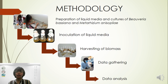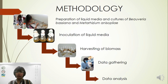Biomass was filtered, oven-dried, and macerated, and spore count including young spores and blastospores were counted using a hemocytometer. Spore germination was done by spread plating suspensions on solid media. Data analysis was done by one-way ANOVA and Tukey's HSD. CRD was the experimental design.